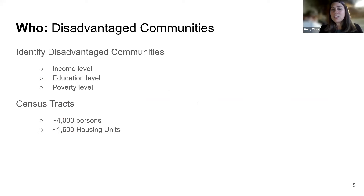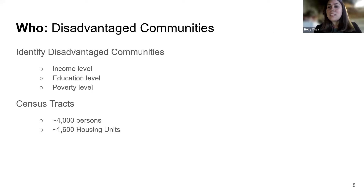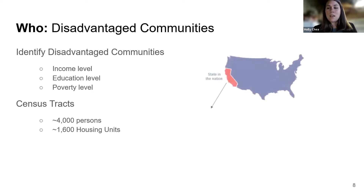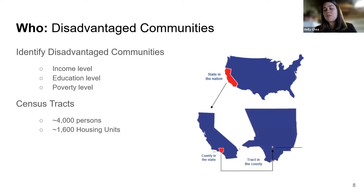Looking at who we studied: we focused specifically on disadvantaged communities, which can be defined in many different ways. The indicators we used were income level, education level, and poverty level. After literature reviews on different studies of pandemic transit equity, we developed our methodology. We used average income, education, and poverty for census tracts — approximately 4,000 persons each. You can see the state of California, then a county level, and then the smaller census tract. There are even smaller areas like blocks and block groups, but for our study, census tracts were the best data method.